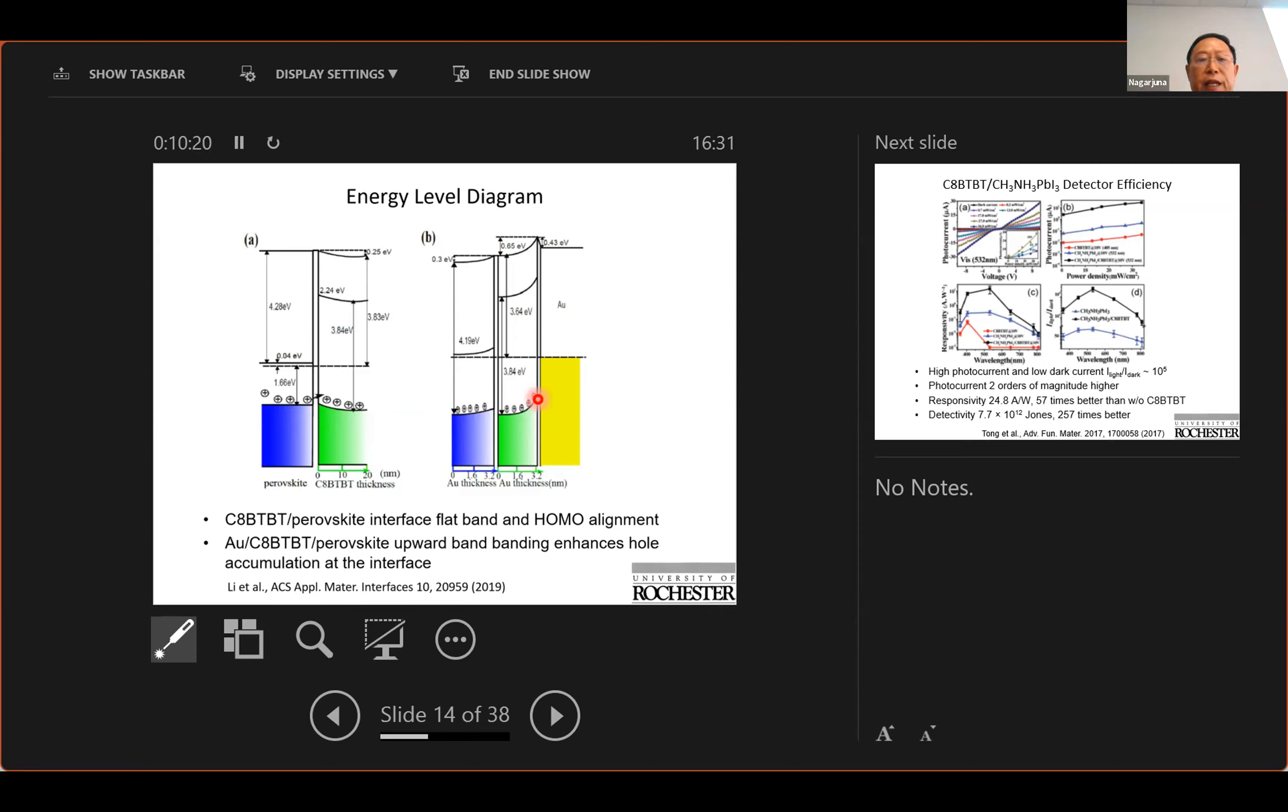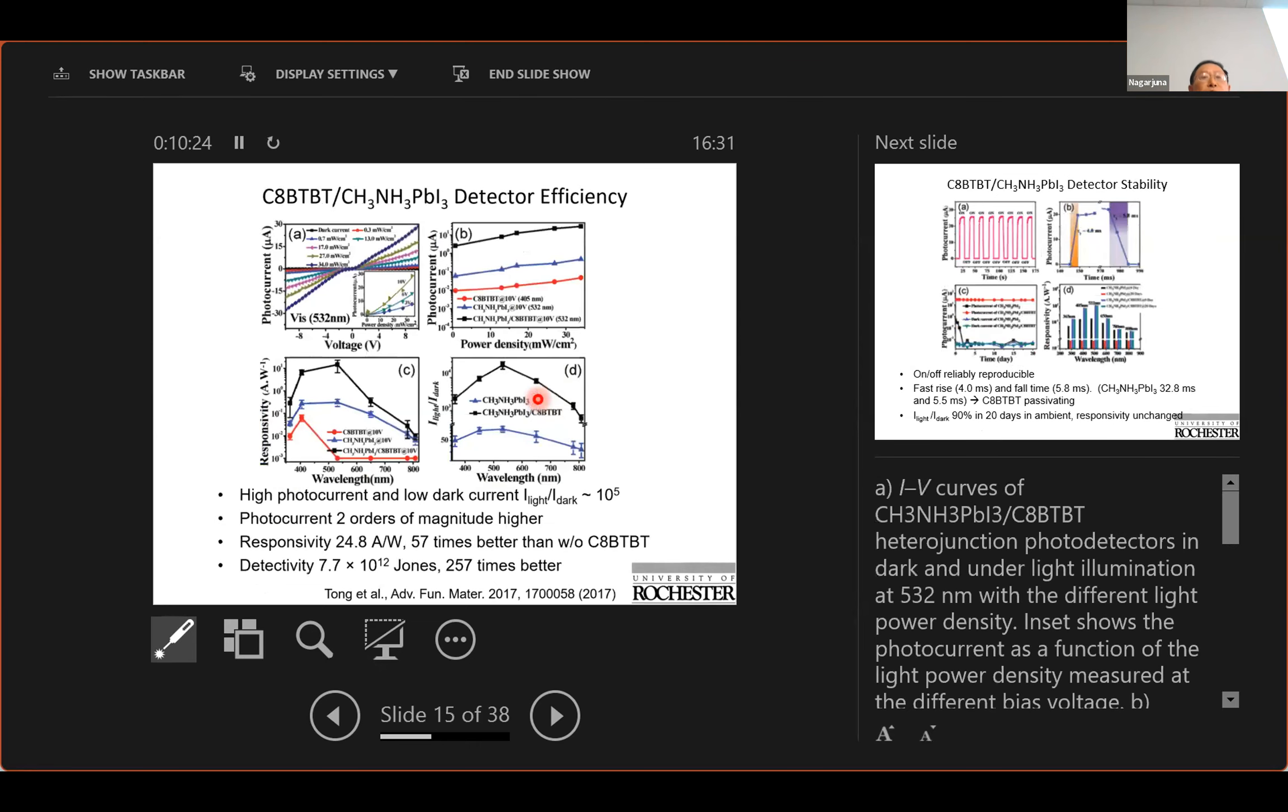So this hole accumulation actually improved the detector efficiency and here is example of the photodetector. CABTBT on perovskite photodetector shows very high photo current and dark current ratio is about 10 to the fifth. And with CABTBT the photo current increased by two order of magnitude. And the responsivity is about 57 times improvement and also detectivity improves about 200 times, 250 times.